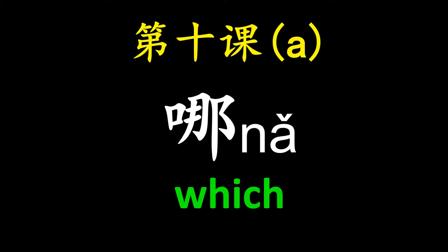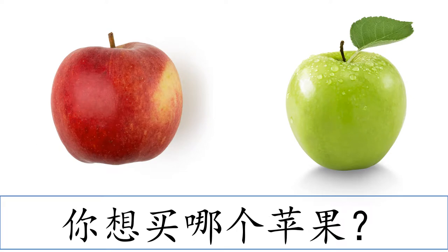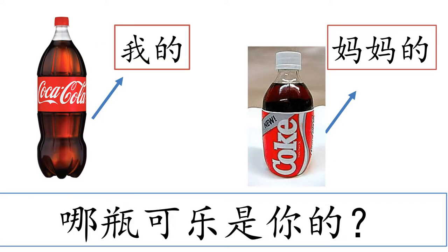Let's see some examples. 你喜欢哪本书? means 'Which book do you like?' 你想买哪个苹果? means 'Which apple do you want to buy?' 哪瓶可乐是你的? means 'Which Coke belongs to you?'